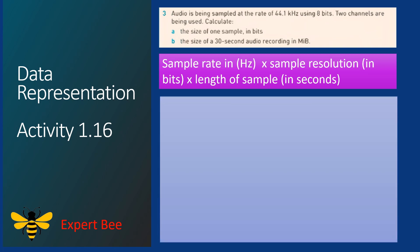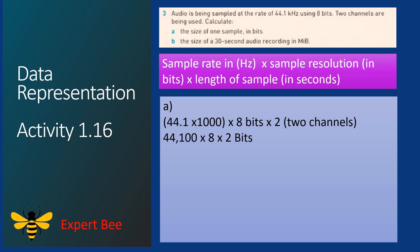For part (a), the sample rate is 44.1 × 1000 = 44,100 Hz. We multiply 44,100 by 8 (sample resolution in bits) and by 2 (two channels) to get 705,600 bits. This is the answer for part (a).